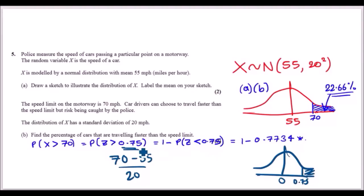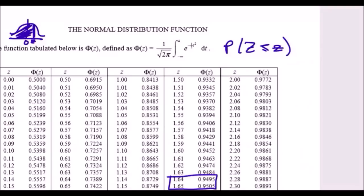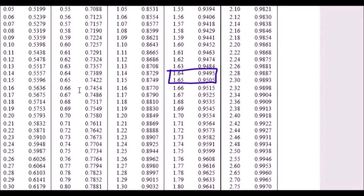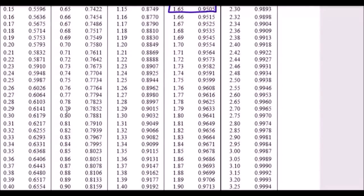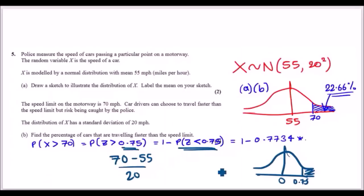From the z-table, P(Z < 0.75) = 0.7734. Therefore P(X > 70) = 1 - 0.7734 = 0.2266, or approximately 22.7% of cars are travelling faster than the speed limit.